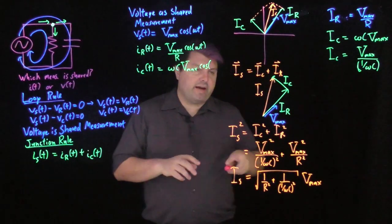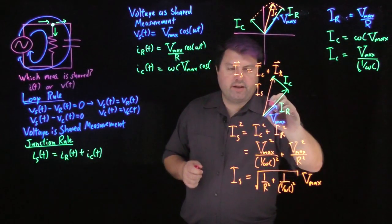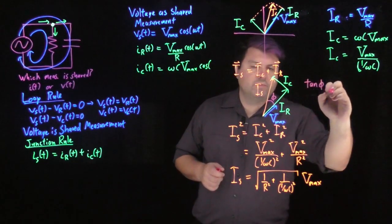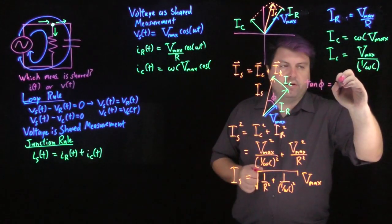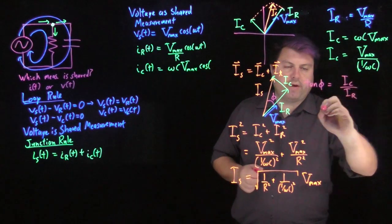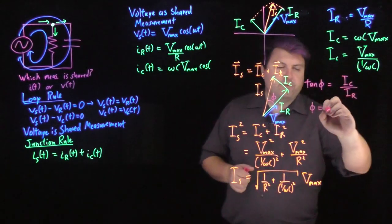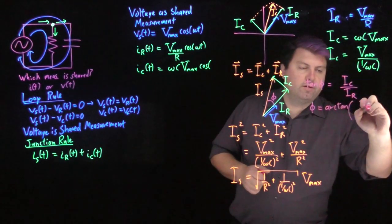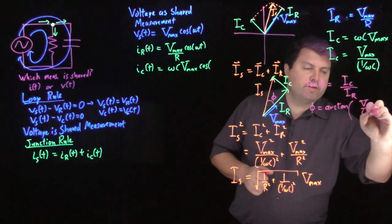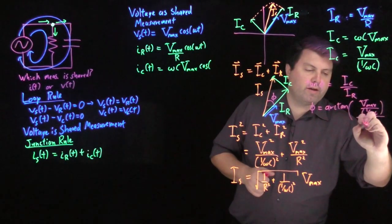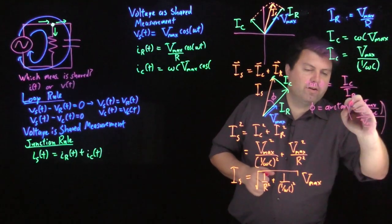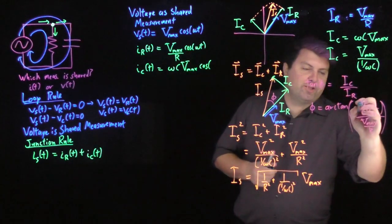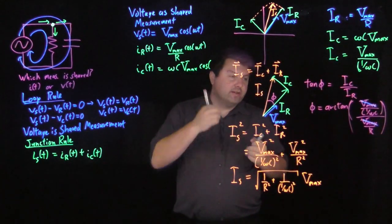Lastly, we can take a look at this phase angle phi. And so we have that the tangent of our phase angle is going to be I sub c max over I sub r max. So our phase angle phi is going to be the arc tan of capital V max over one over omega c or if we want to just bring it all over, we have a lot of very ugly division math to go through. We'll make it a little bit easier with this divide by v max. So then this r goes up on top.